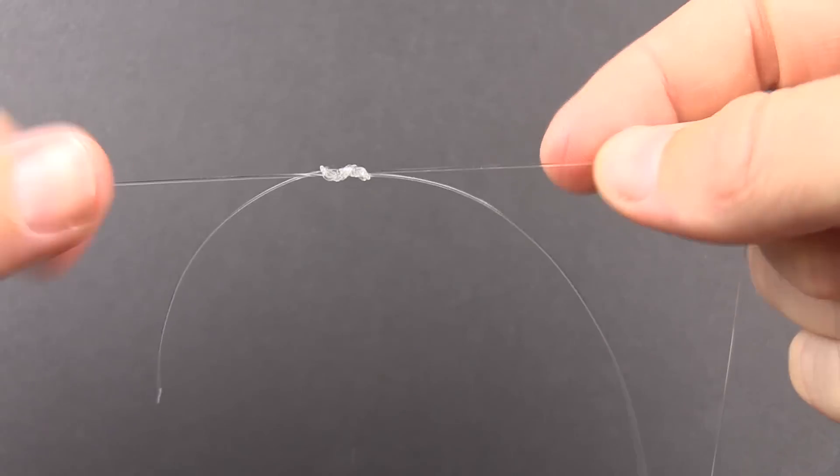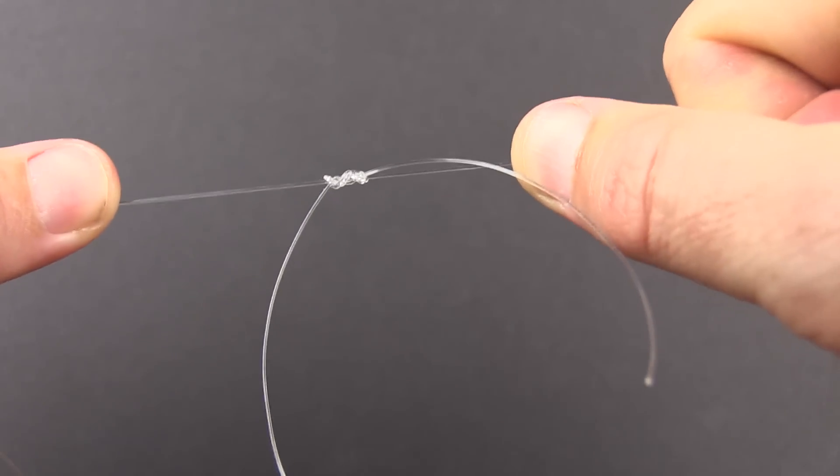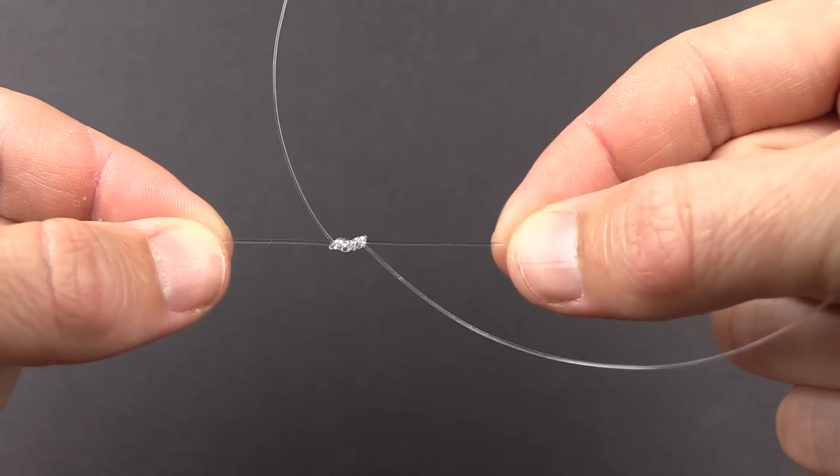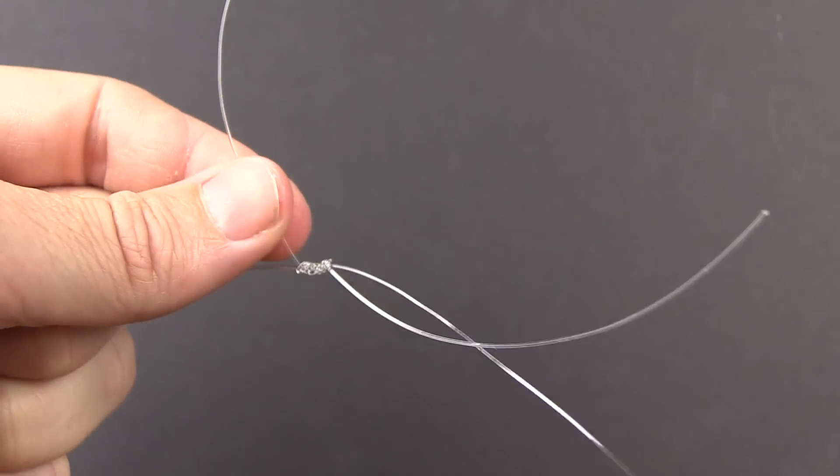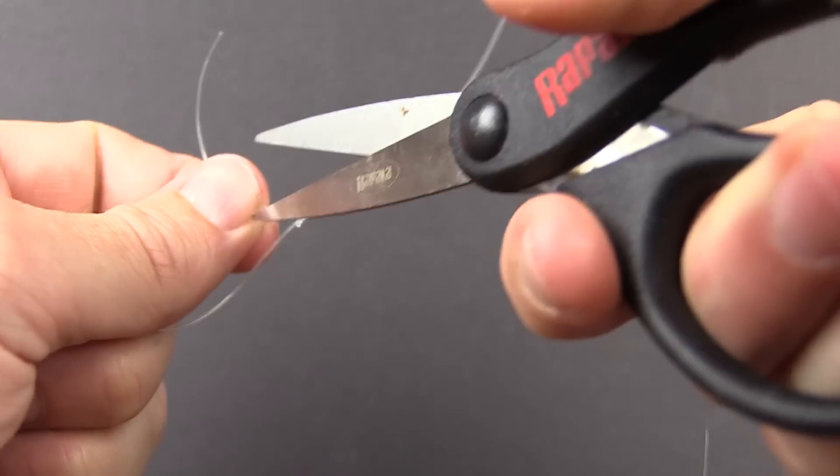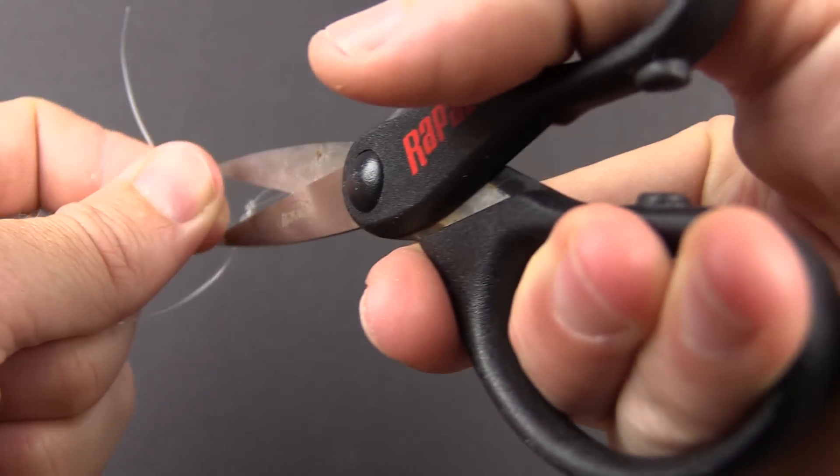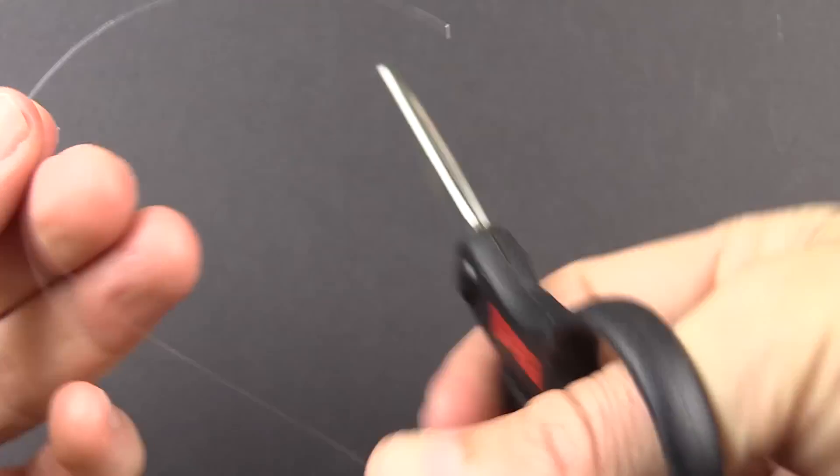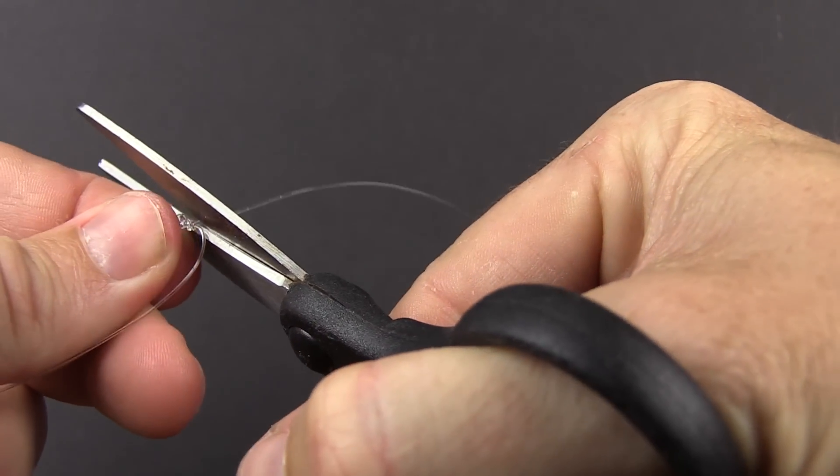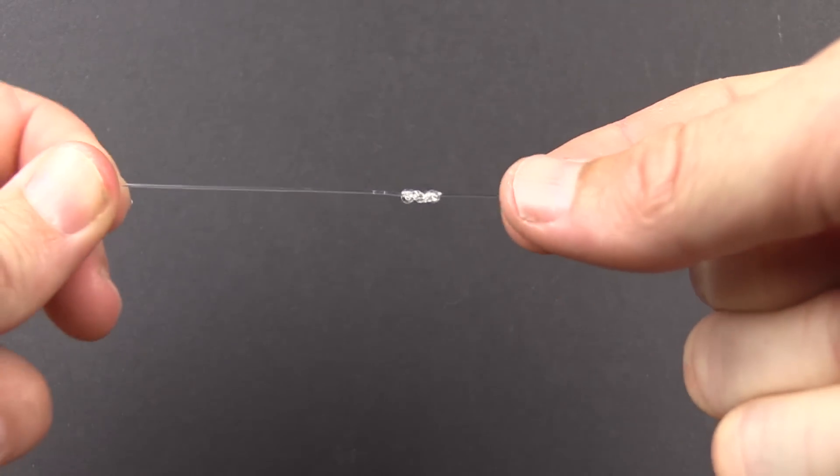So here's the completed knot. As you can see, it's very basic but very strong. The last step is to cut off the tag ends, and we can cut them very close because this knot will not budge. So there's one, here's the leader tag, and we are done.